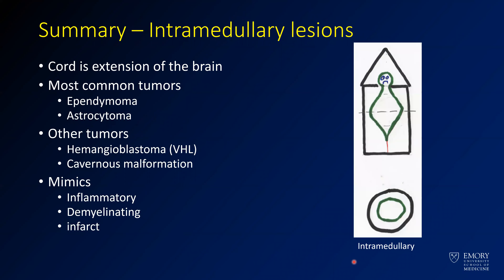Intramedullary lesions are the bread and butter of spinal lesions. Think about the cord as an extension of the brain. If you see an enhancing tumor and call it an ependymoma or astrocytoma, you'll be right more than 90% of the time. If you see features pointing toward hemangioblastoma or cavernous malformation, think about those as well. Inflammatory disease and other mimics can definitely simulate tumors too.